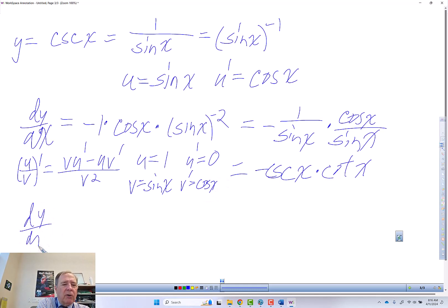So dy over dx is, we multiply this way. So that's 0 minus, multiply that way, cosine of x, and then divided by v squared, which is sine squared x.